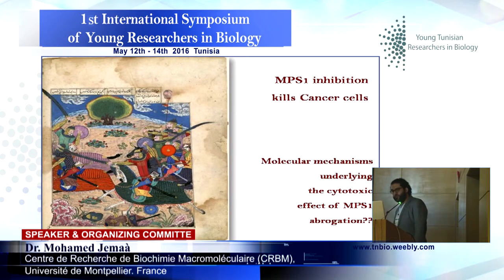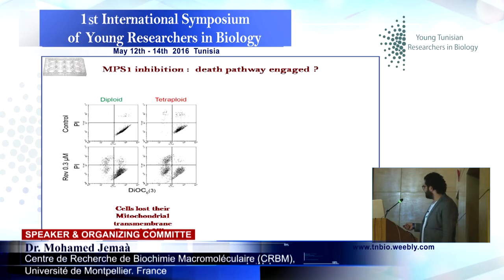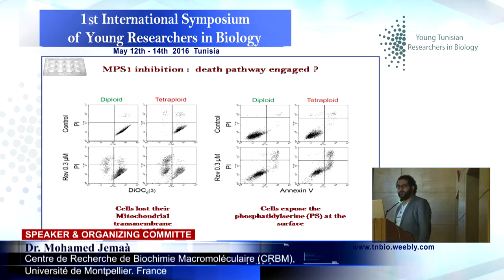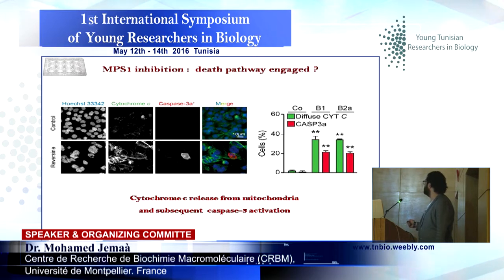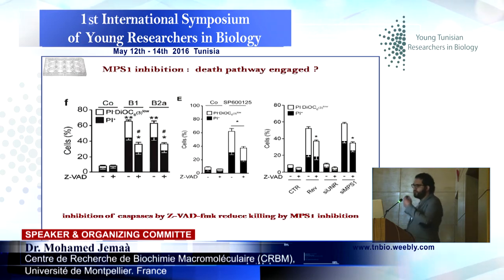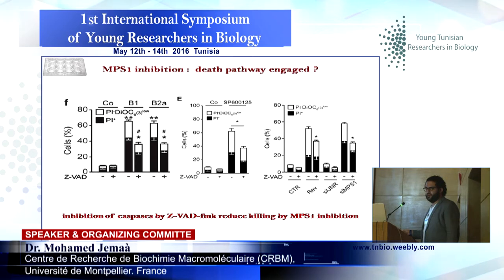So, what are the molecular mechanisms underlying this effect? We saw that cells lose their mitochondrial transmembrane potential when we use the DiOC dye. When we use the annexin V test, we clearly see that cells also expose phosphatidylserine at the surface. Cells also release cytochrome C from mitochondria and activate caspase 3. We can see the quantification of the data after treatment with two different MPS1 inhibitors. When we co-treat cells with MPS1 inhibitor and a caspase inhibitor, Z-VAD, we decrease cell death induced by MPS1 inhibition.